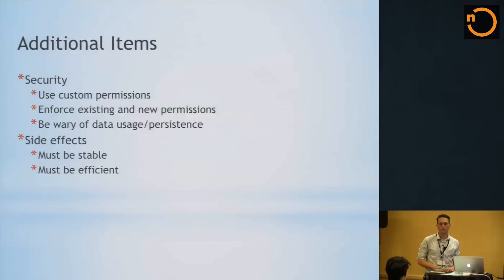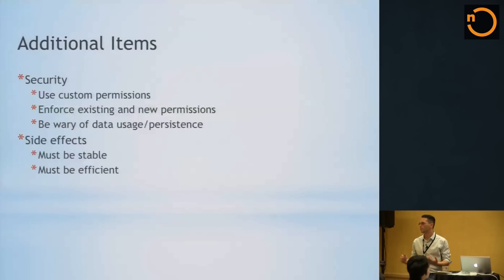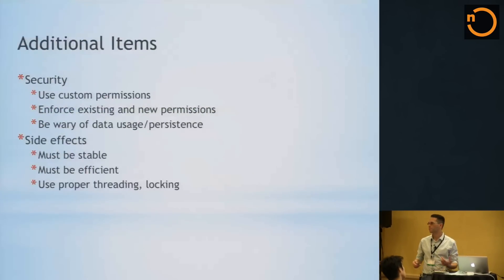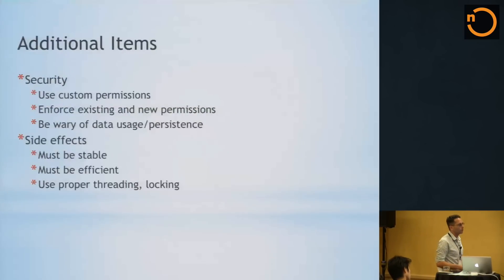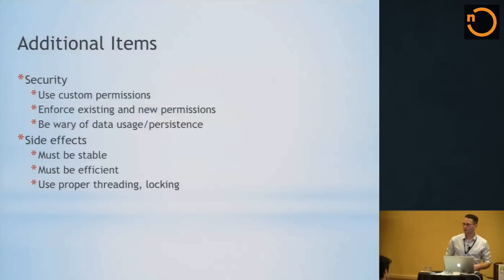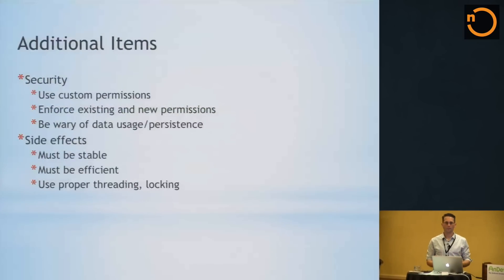On the question of whether custom permissions show up in the Play Store - only the name will appear, without any description. You want to make sure your code is efficient - you don't want to chew up a ton of memory and make it harder for apps to run on your platform. You want to make sure you use proper threading and locking - those typical things you need to be concerned about.